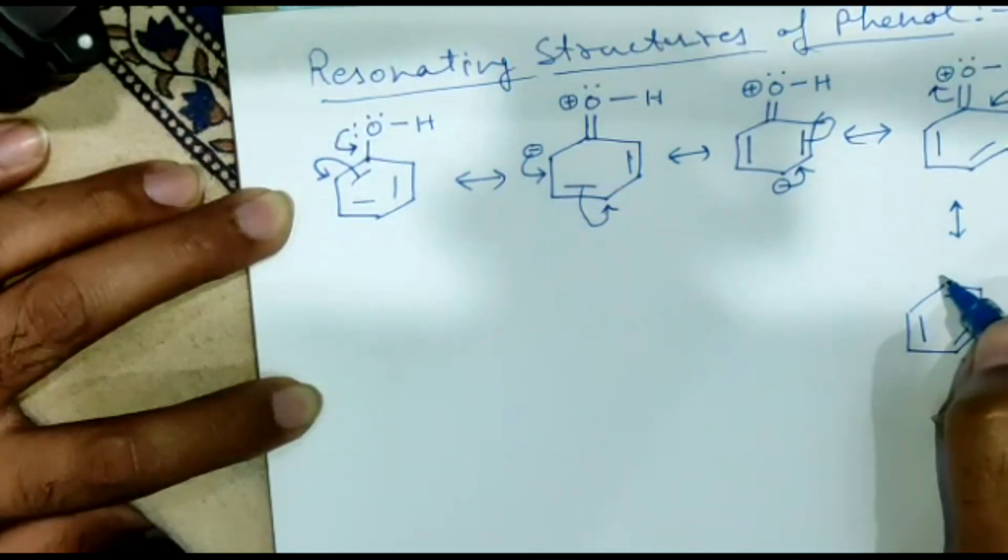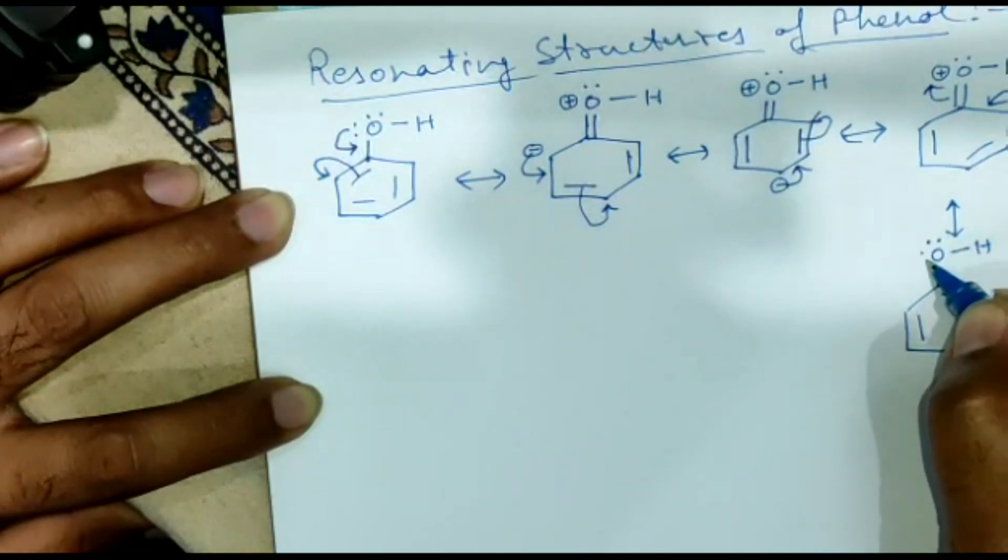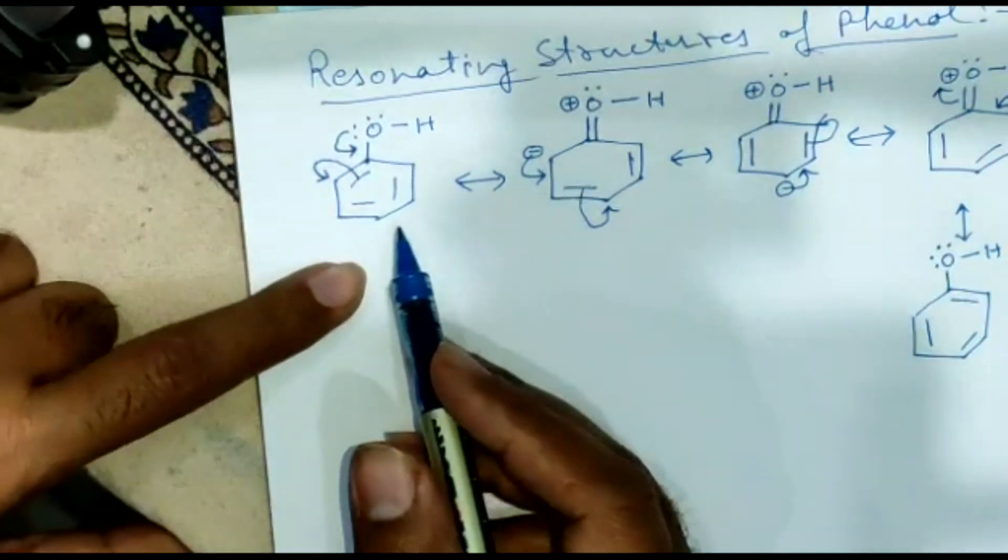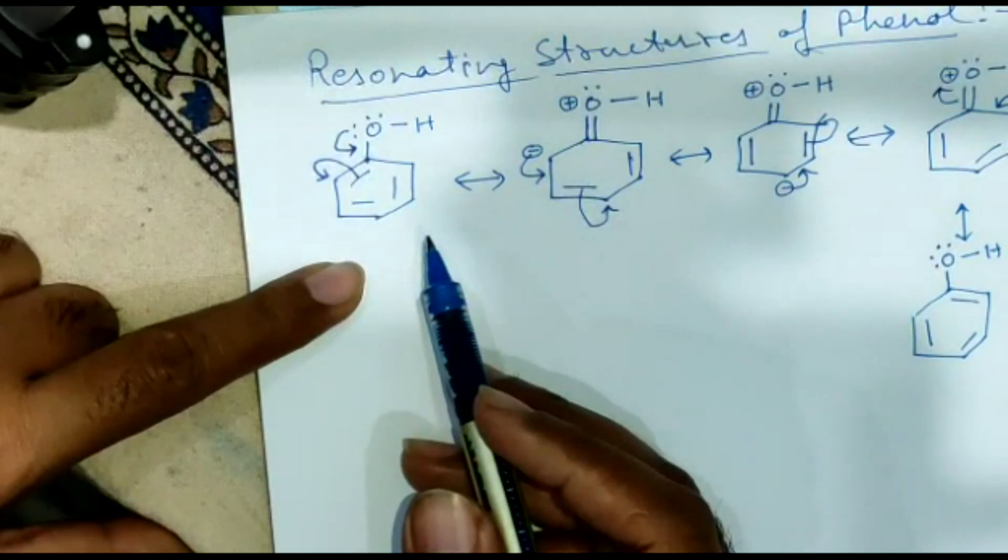With three double bonds, single bond between oxygen and carbon, and two lone pairs. Now you can easily resemble it with the first structure. The only difference between the last and the first structure is the positions of the double bond.